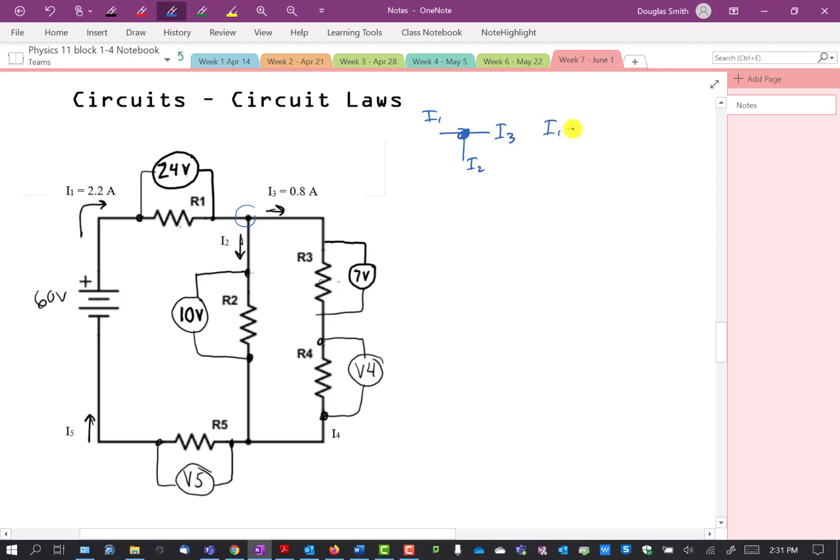And that means I1 is equal to I2 plus I3. So we have 2.2 equals I2 plus 0.8. Therefore, I2 is equal to 1.4 amps.